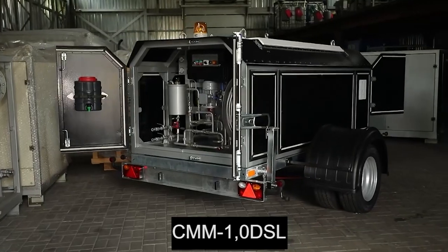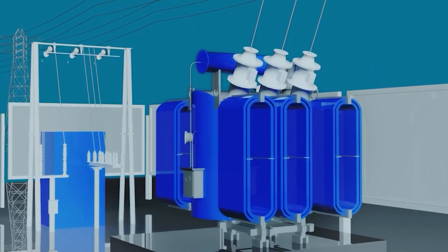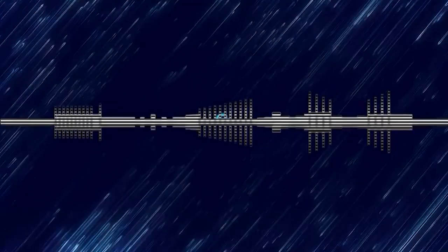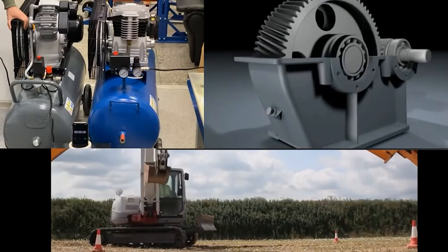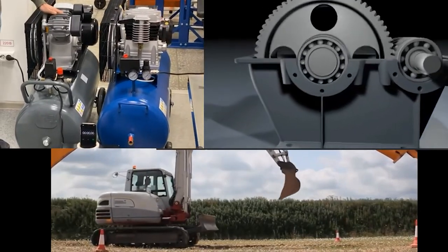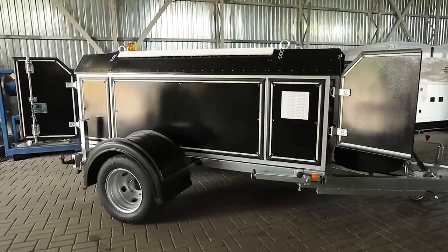CMM-1.0DSL is a versatile machine that can be used to refill oil systems in transformers, cable lines, and power turbines, as well as oil systems in machine tools, gearboxes, compressors, and excavators. Let us consider the entire process of using the CMM machine stage by stage.